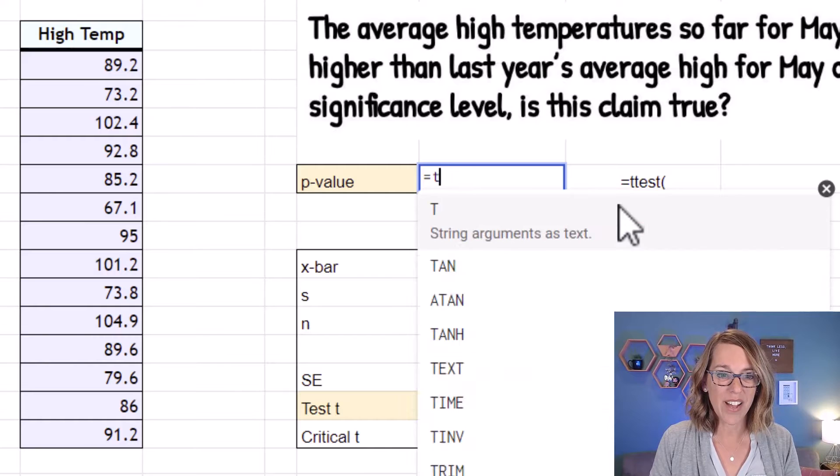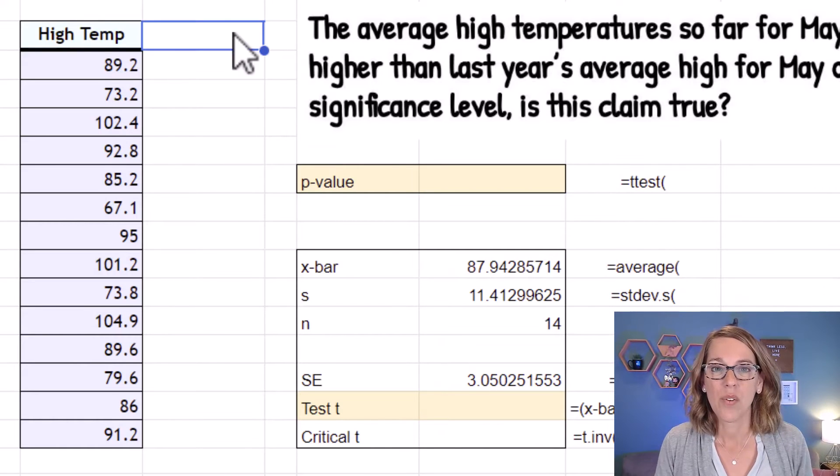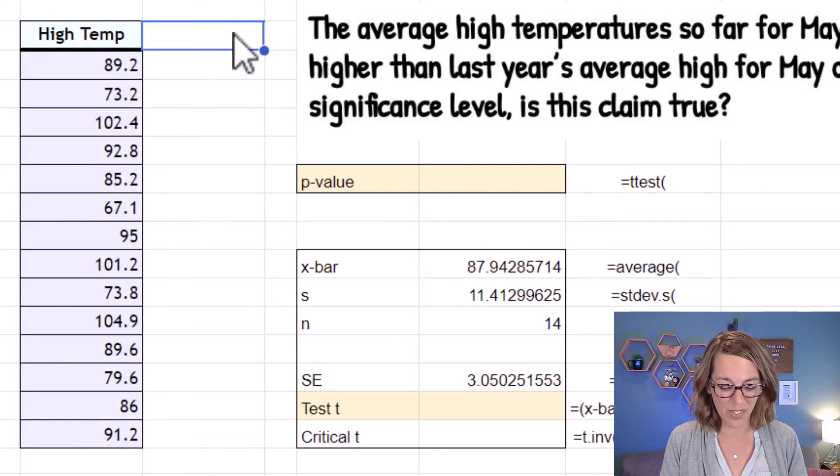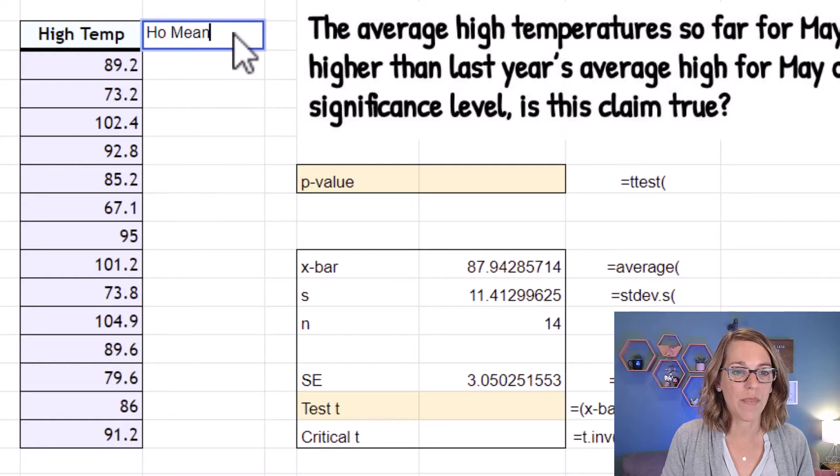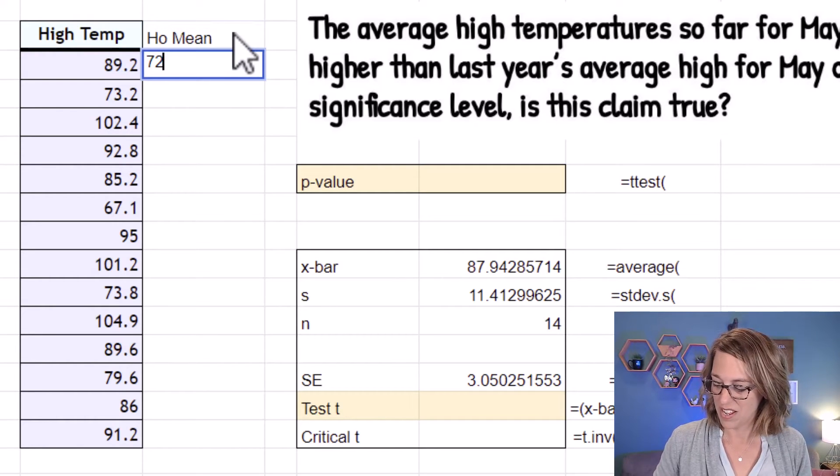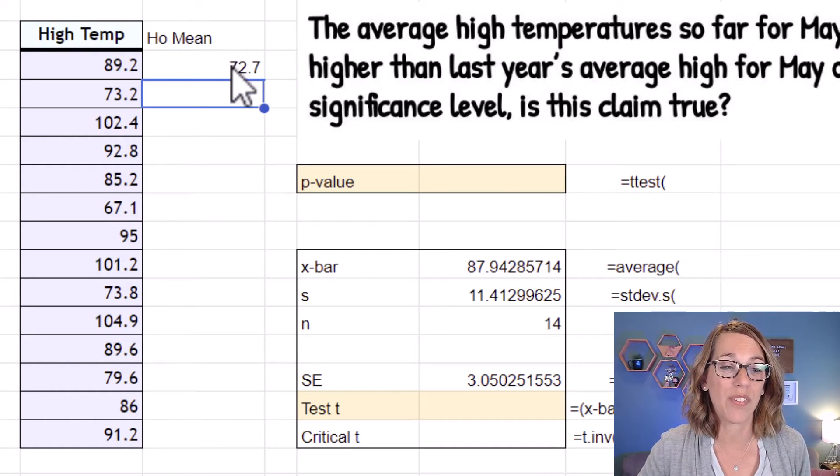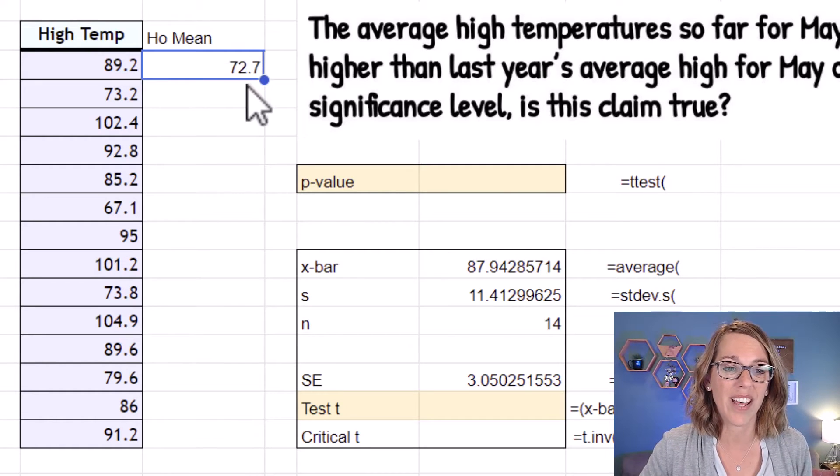Now I'm going to delete what I've got in here so far. We're going to put in a column right next to high temp that is just my hypothesized mean of 72.7. So I'm just going to label this h sub zero mean, my hypothesized mean. This is 72.7. I want this in all of those cells, so I'm going to click on that cell.